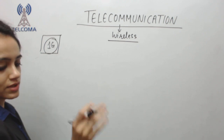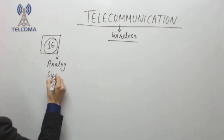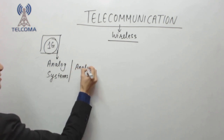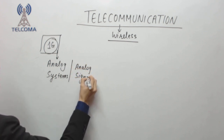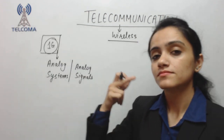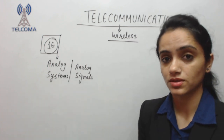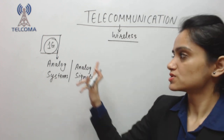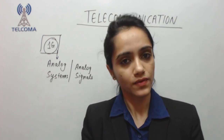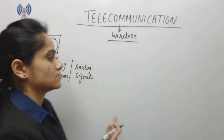In 1G, they preferred analog signals. All processing was of analog signals — for example, the waveform being radiated while speaking is an analog signal. It is not converted into a digital one. So 1G uses an analog system with analog signals. The disadvantage of analog signals is that they are not able to cover long distances.